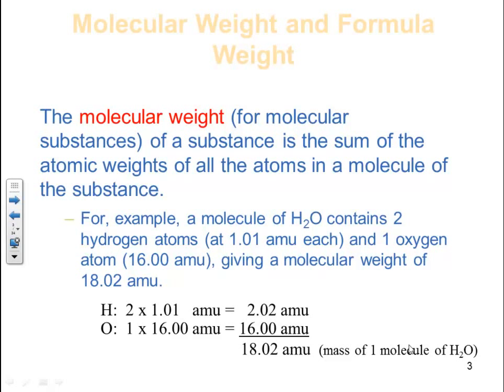Typically when reading masses off the periodic table, we go to at least the hundredths place, but you do not let that dictate your sig figs. If you have numbers that require more decimal places from the periodic table, use more. In general, going to the hundredths place should be okay for our calculations. Note this is for one molecule — since we can't really deal in individual molecules, there's another way we get around that, which is molar mass, discussed later.